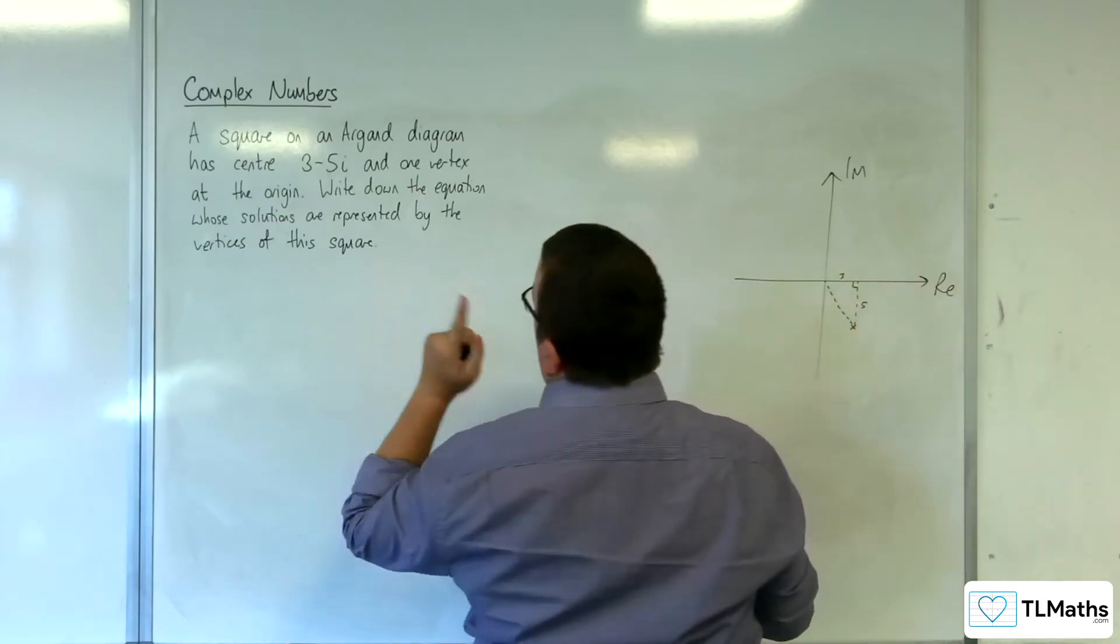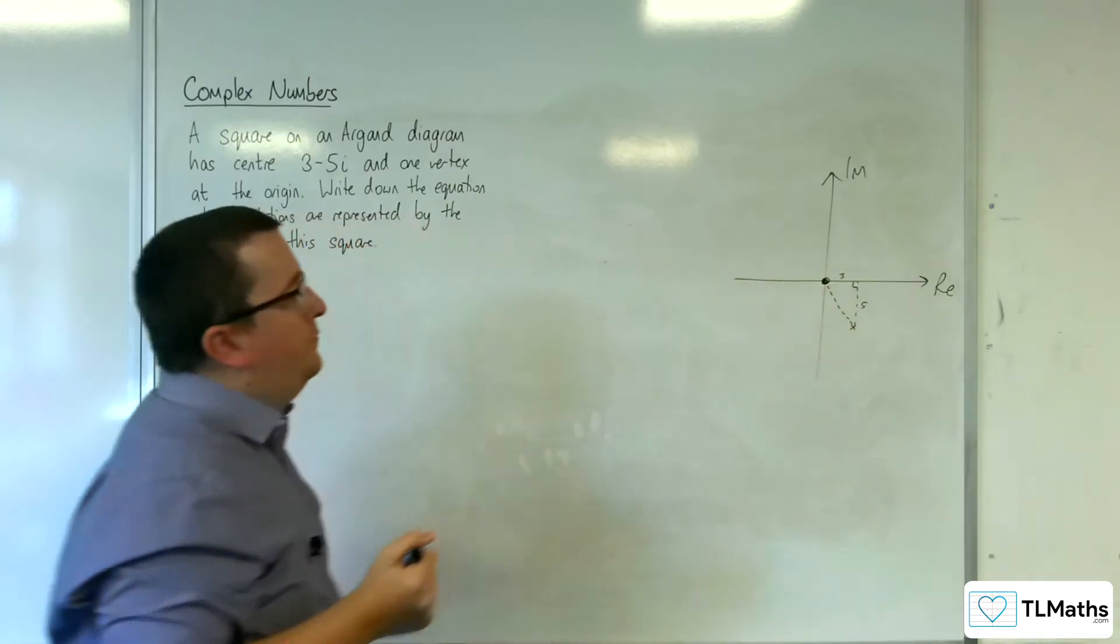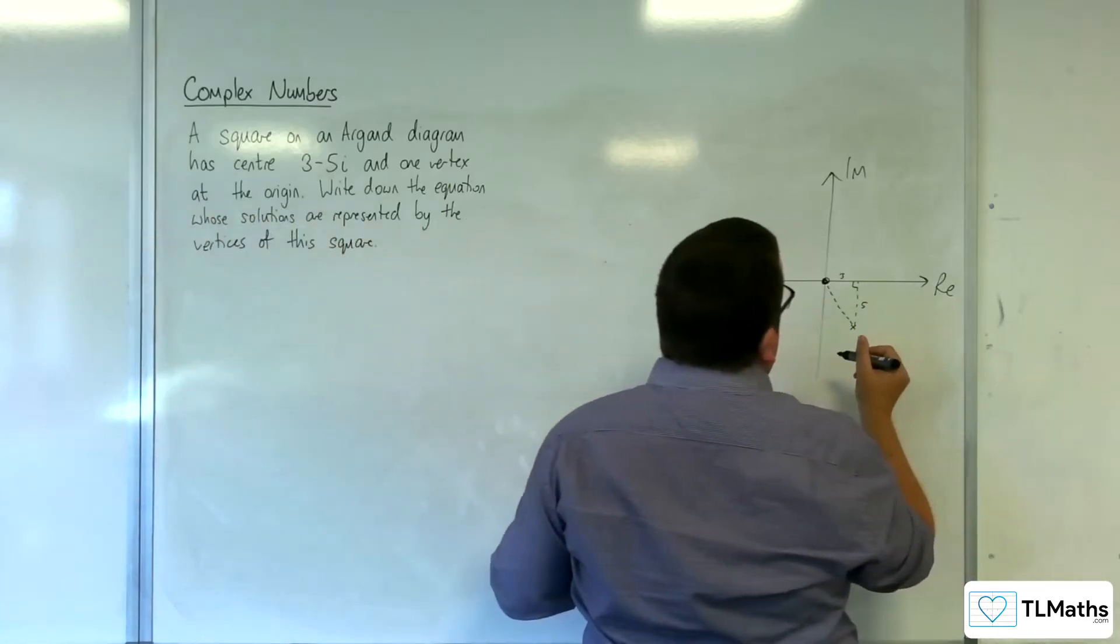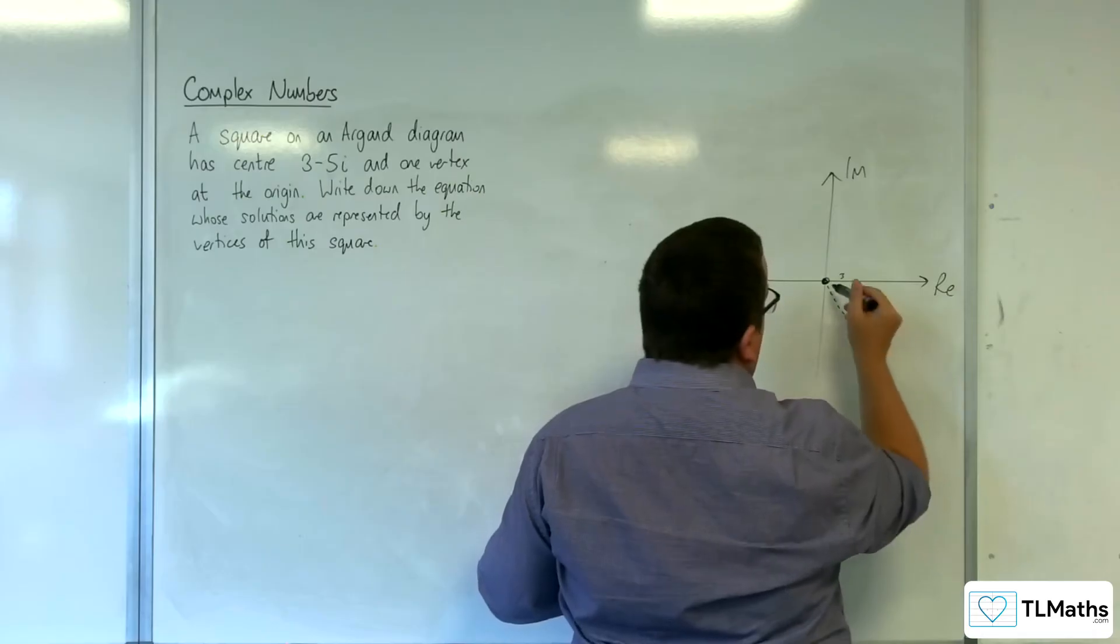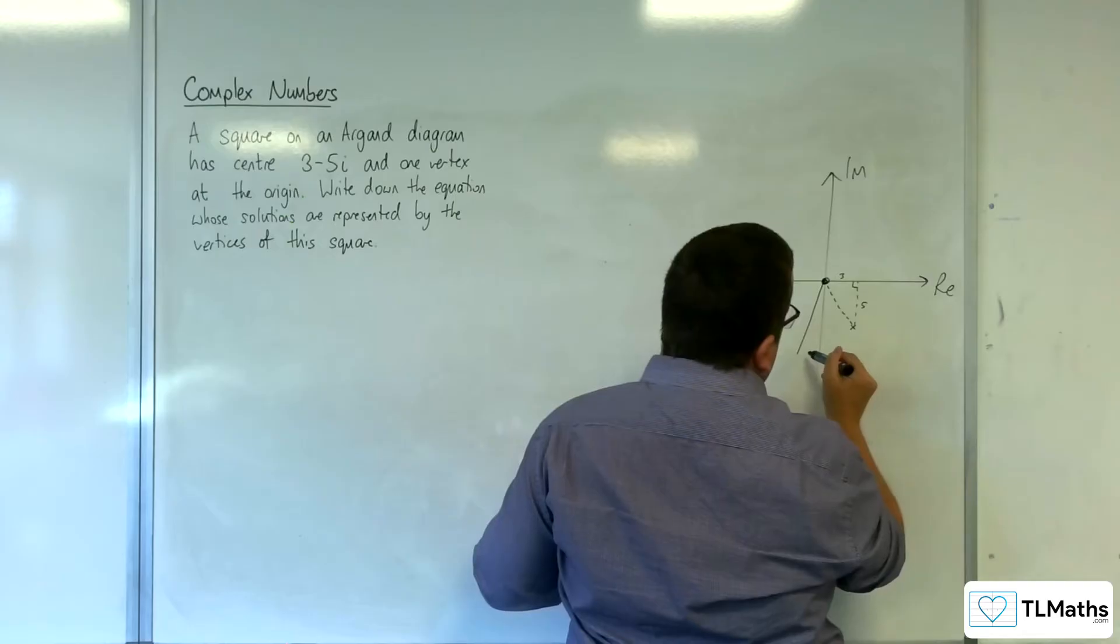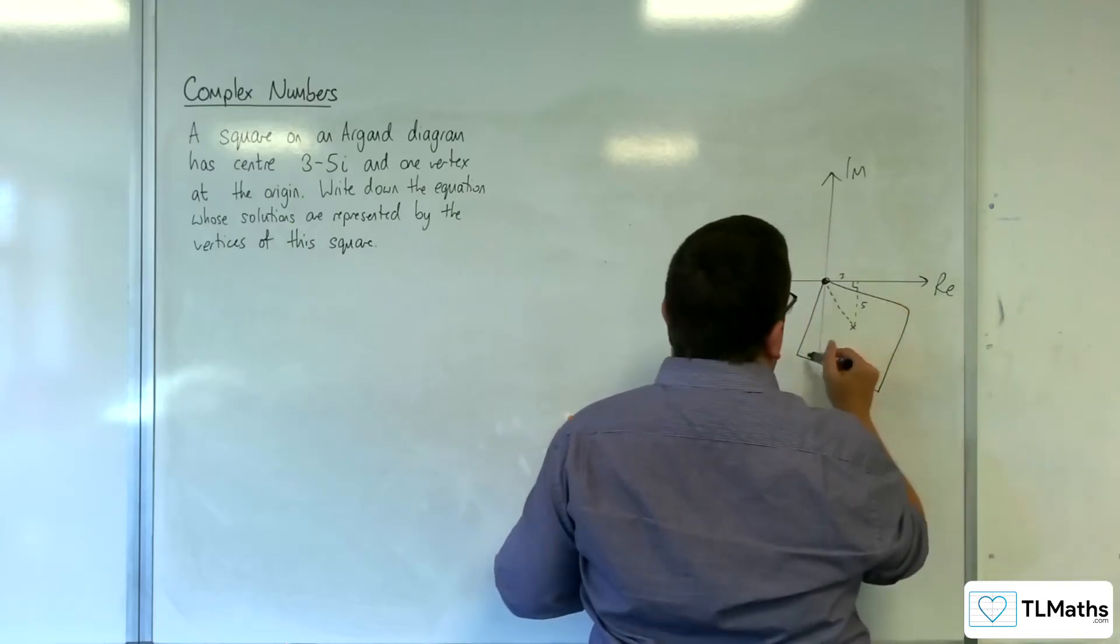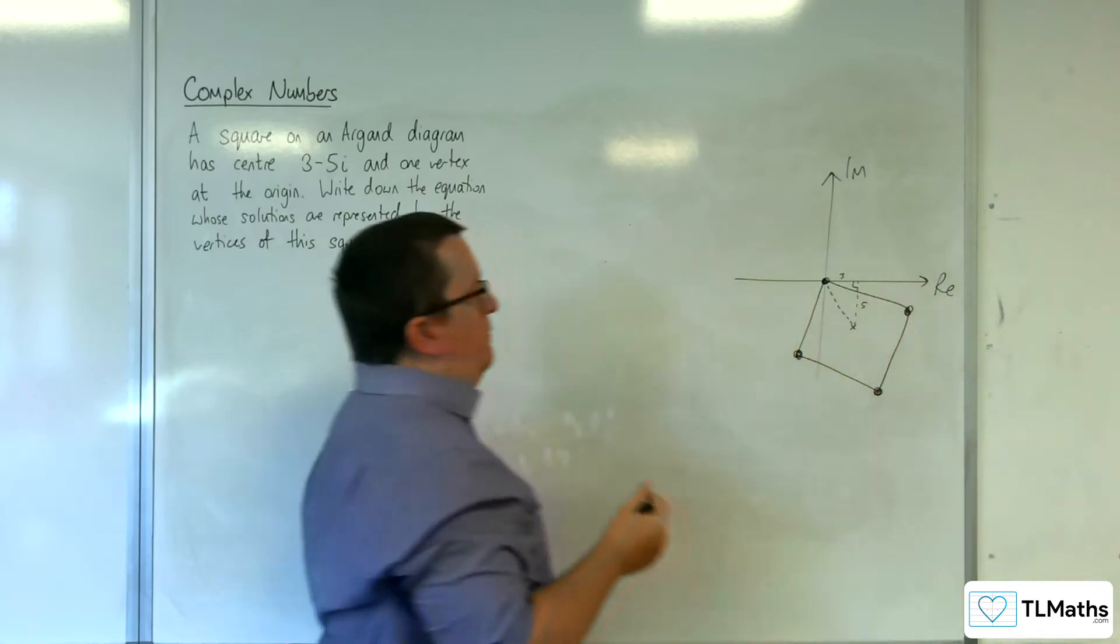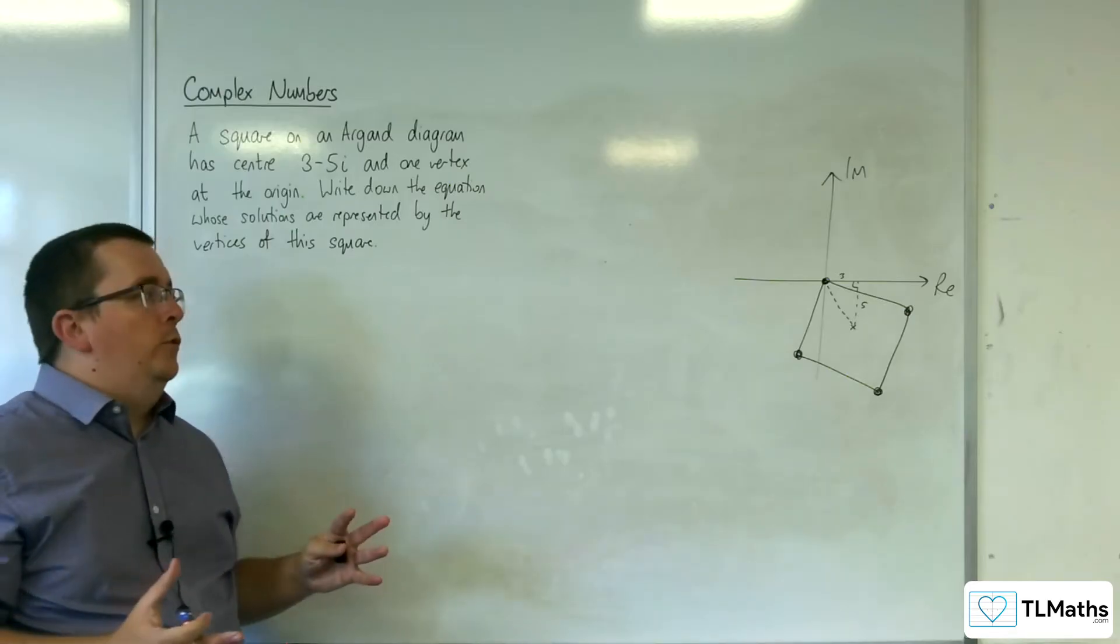Now we also know that it's got a vertex at the origin. So that means that if it's a square such that that is the case, that that's the center, then it's going to look something like this. I haven't drawn it perfectly, but it's going to look something like that.